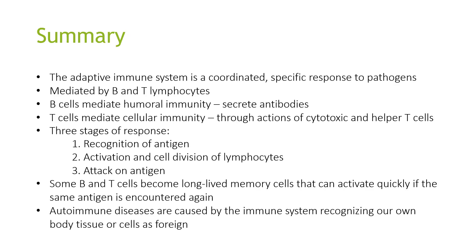In summary, the adaptive immune system is a coordinated, specific response to pathogens. It is mediated by B and T lymphocytes. B cells mediate humoral immunity and secrete antibodies. T cells mediate cellular immunity through the actions of cytotoxic and helper T cells. There are three stages of response: recognition of the antigen, activation and cell division of lymphocytes, and attacking the antigen. Some B and T cells become long-lived memory cells that can activate quickly if the same antigen is encountered again. Autoimmune diseases are caused by the immune system recognising its own body tissue as foreign — examples include multiple sclerosis, which attacks myelin; rheumatoid arthritis, which attacks the joints; and type 1 diabetes, which attacks insulin-producing cells.